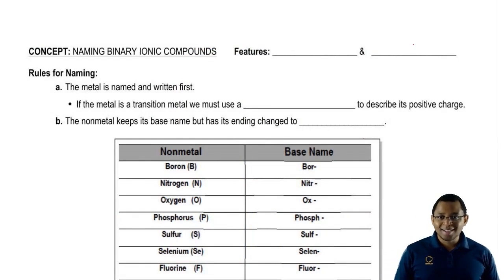First we're going to look at just regular ionic compounds, which we refer to as binary ionic compounds. What are the features? How do I know I have a binary ionic compound?